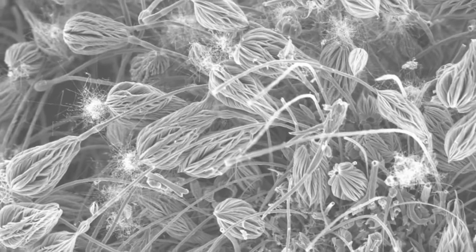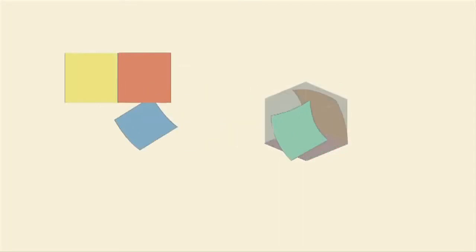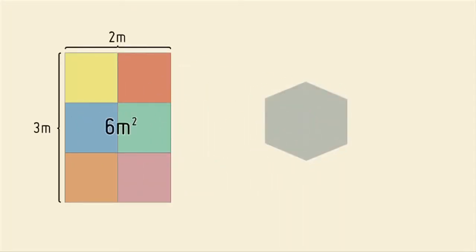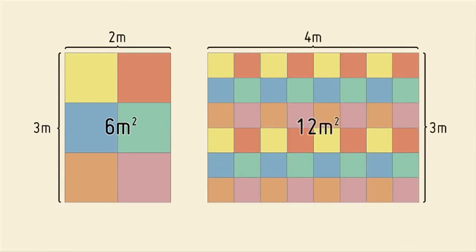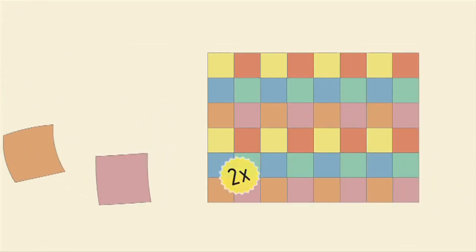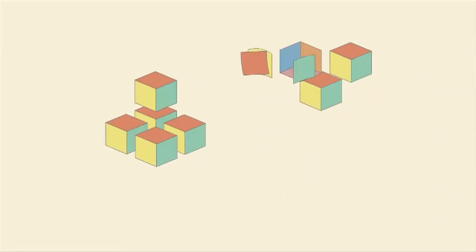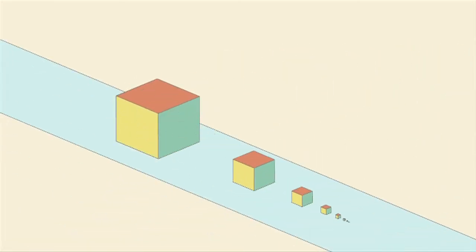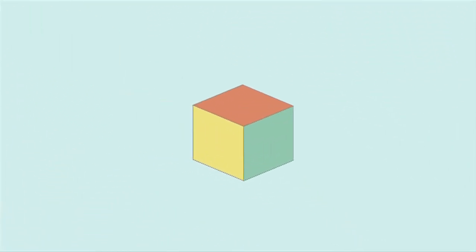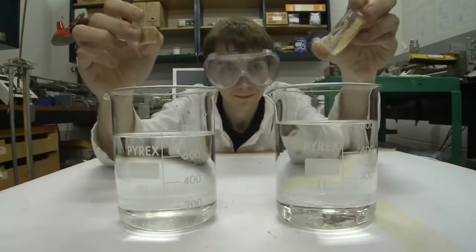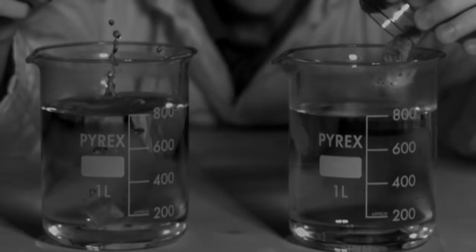One reason for this is surface area. If you take a cube and lay the surface flat, you can see how much of that cube can react with the outside world. If you divide the same cube into 8 little cubes, the surface area is twice as big. If you keep making smaller cubes, the surface area becomes immense. More surface means more area for reactions. This is why powdered sugar dissolves faster than sugar cubes.